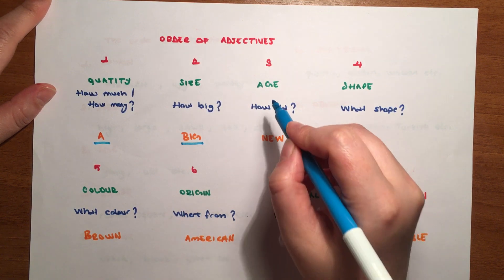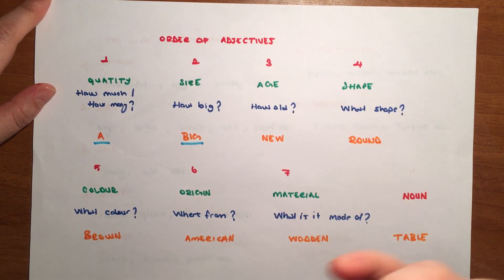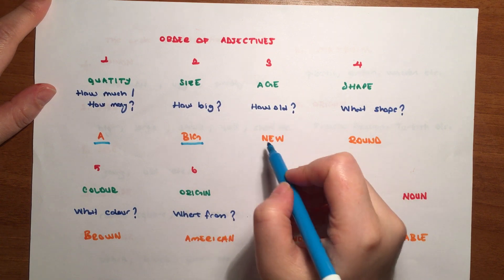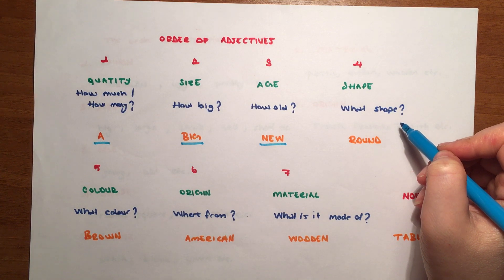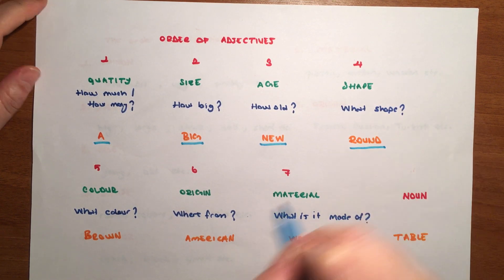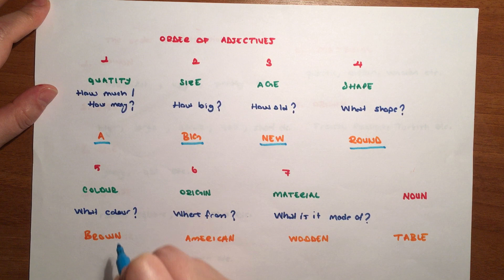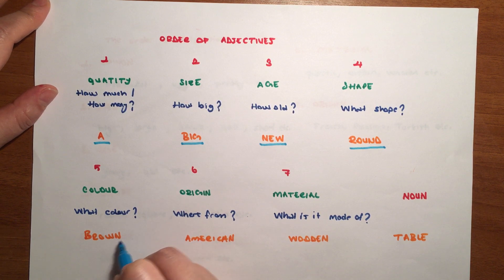Shape - what shape, how is the shape? We said round. Color - what color? We're asking the question brown. Fifth one, origin - meaning where it comes from, or where its origin is based, if we're asking that. In the sixth position we use this - American. Material - what is it made of? Wood.